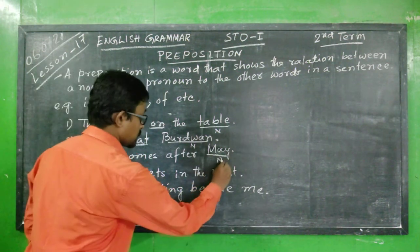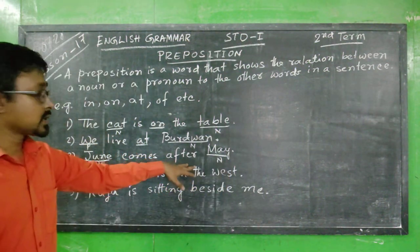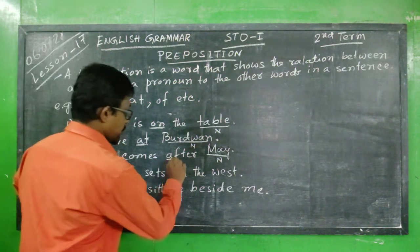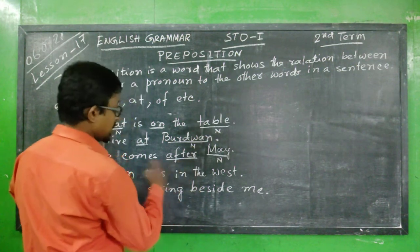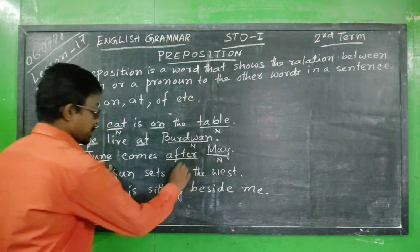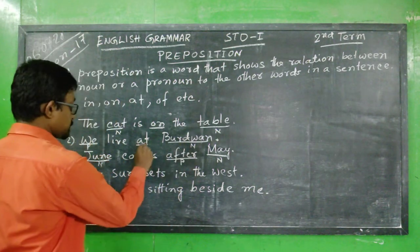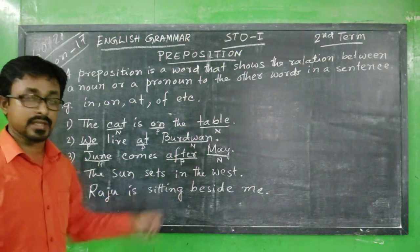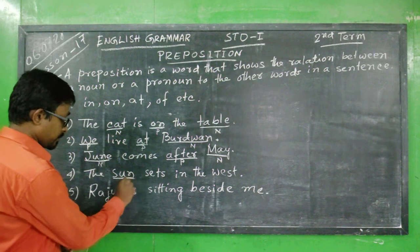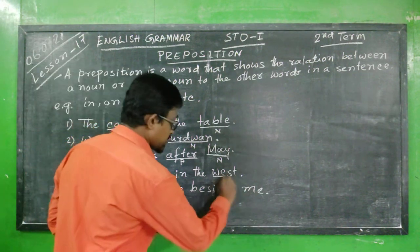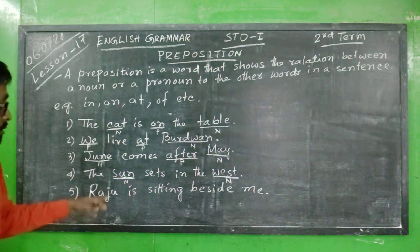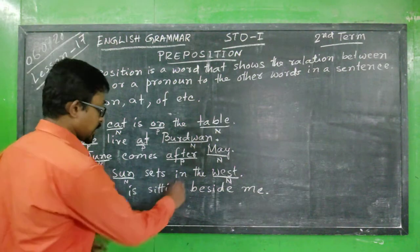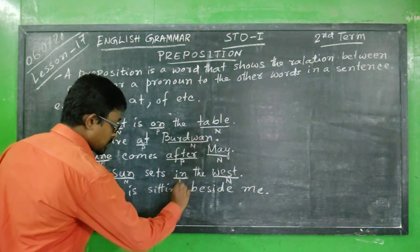Between June and May, there is a preposition which clarifies the relation between them — that is 'after'. Another example: 'The sun sets in the west.' Here, 'sun' is the noun and 'west' is also a noun. The preposition 'in' connects these two nouns.